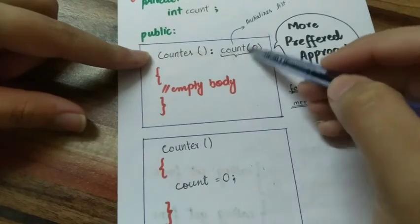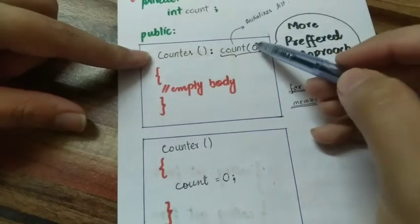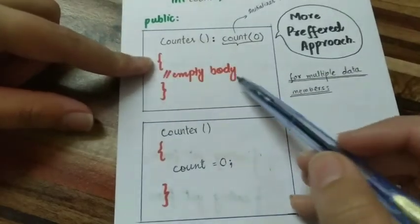Basically, the count has been initialized. Now the value has been stored, and the body is empty.